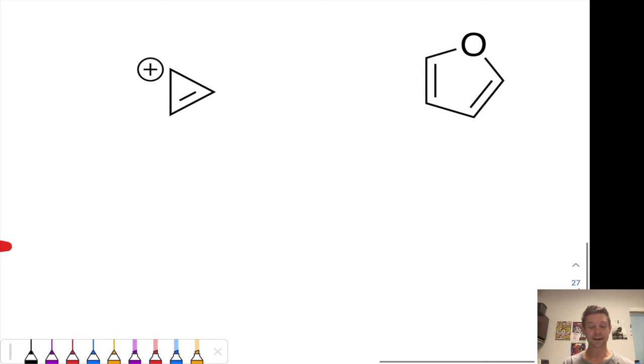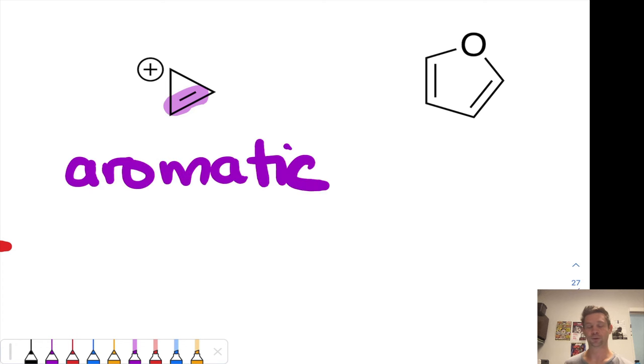Next, we have the cyclopropenyl cation. This is a cyclic molecule, fully conjugated. That cationic carbon has an implied hydrogen, three electron groups, sp2 hybridization, and so all three atoms have sp2 hybridization. How many pi electrons do we have? We've got 2 from the double bond and none from the cationic carbon. This means we have 2 pi electrons total. Is that a 4n+2 number? Yes, when the value of n is equal to 0. This molecule is aromatic with 2 pi electrons. That's a Huckel number—cyclic, planar, fully conjugated.